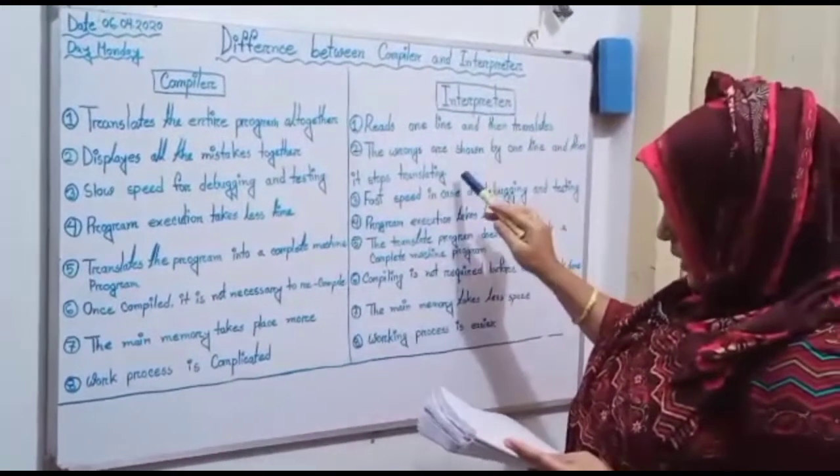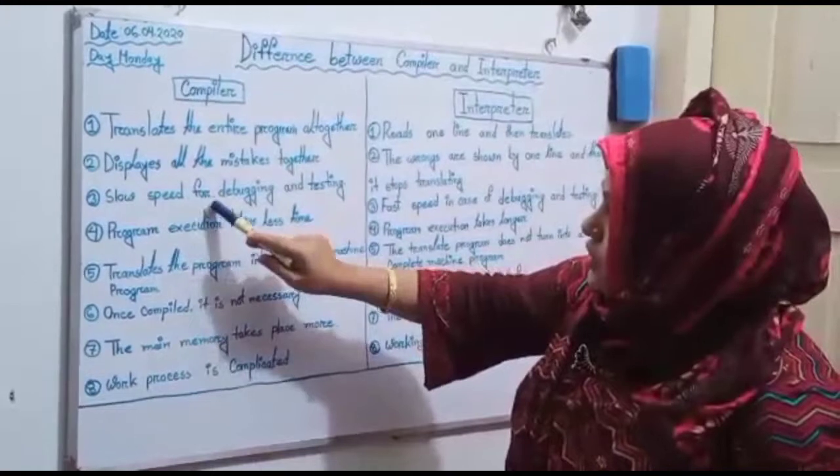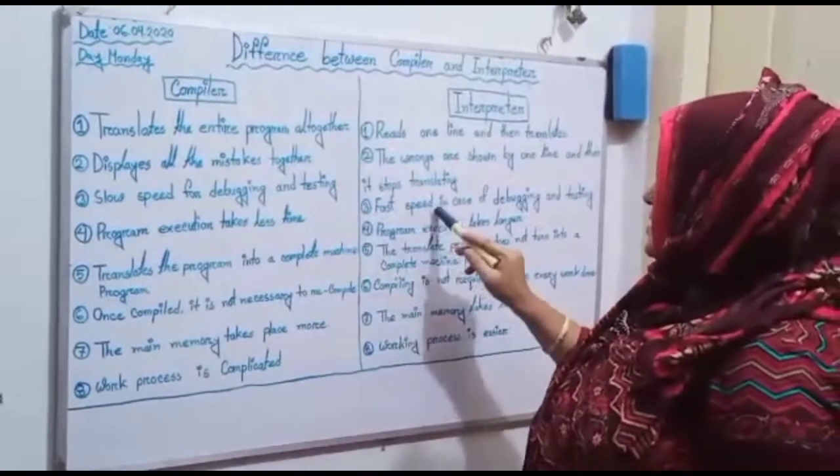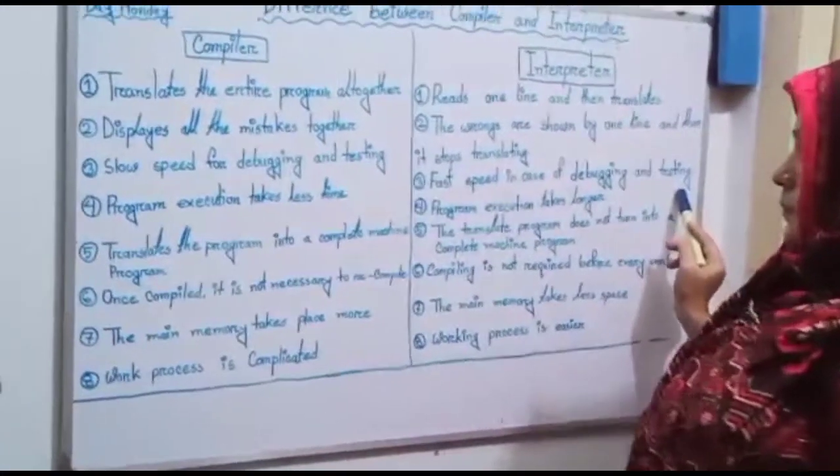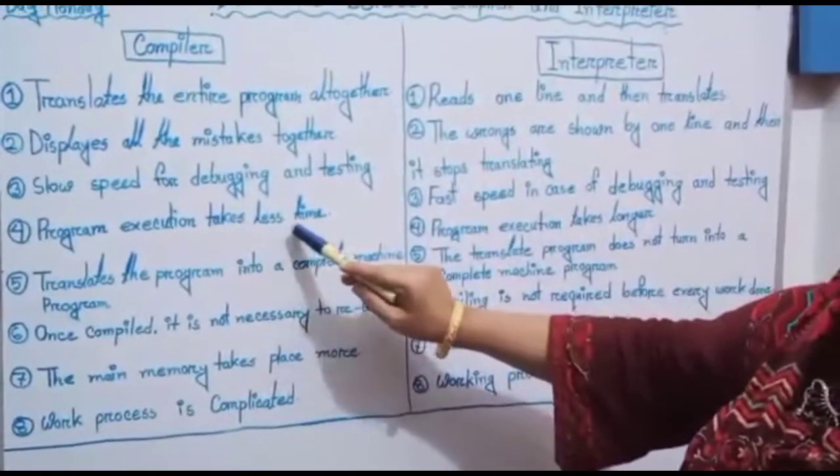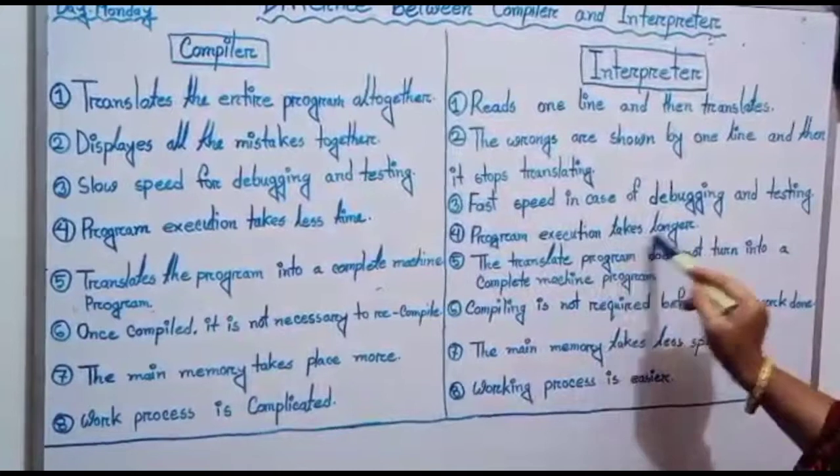Number three: slow speed for debugging and testing, interpreter number three: fast speed in case of debugging and testing. Number four: program execution takes less time with compiler, and program execution takes longer with interpreter.